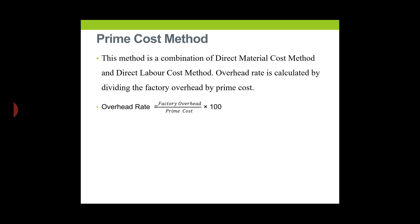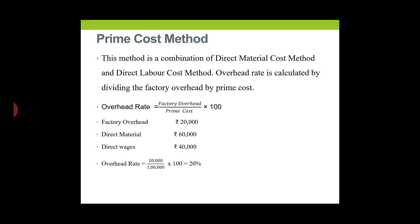Under the Prime Cost Method, the combination of direct material cost and labor cost is used. The overhead rate is calculated by dividing factory overhead by prime cost and multiplying by 100. For example, if factory overhead is Rs. 20,000, direct material is Rs. 60,000, and direct wages are Rs. 40,000, then prime cost = Rs. 1,00,000 and overhead rate = 20,000 / 1,00,000 × 100 = 20%.